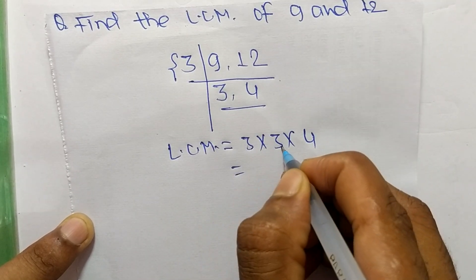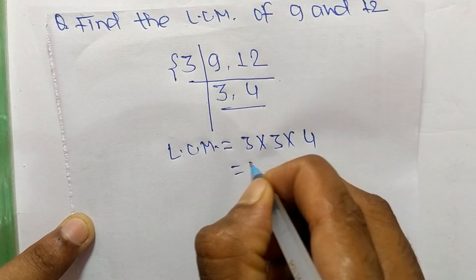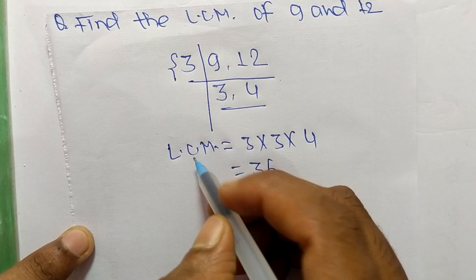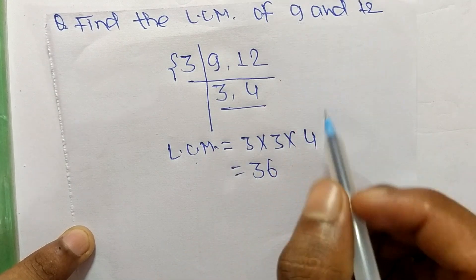3 times 3 equals 9, and 9 times 4 equals 36. So 36 is the LCM of 9 and 12.